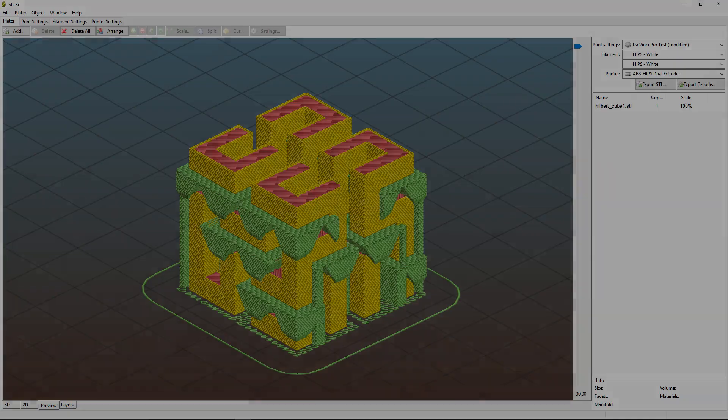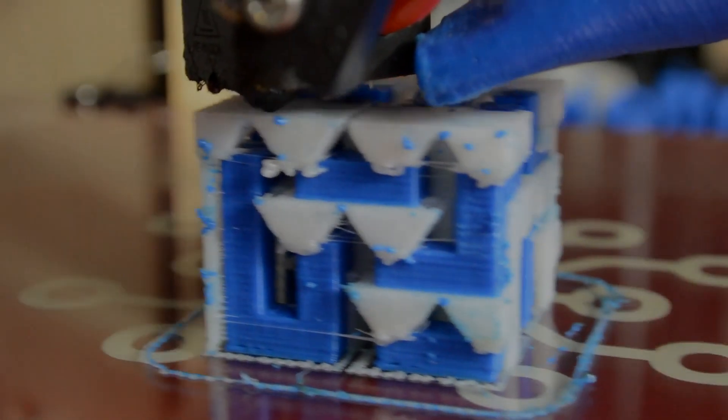You can just soak the part in a solvent to remove all of that support material. So, let me load up my dual extruder with both ABS and HIPS, and let's get to some printing.